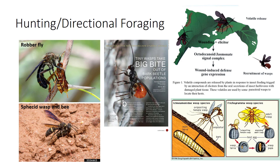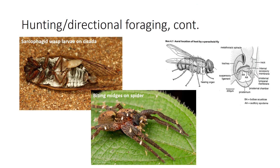Parasitoids of scolytid timber beetles cue into the terpenes released from infested pine trees. Some parasitoids can even detect frass odors from their insect larval hosts. Host location is also accomplished by detecting sound. Blood-sucking flies of hylid tree frogs cue into the frogs' calls. Tachinid parasitoids of some crickets find their hosts by listening to the crickets' calls. Sarcophagid parasitoids of cicadas do likewise. Sarcophagid biting midges find swarms of prey midges by detecting the sounds produced by wingbeat frequencies.